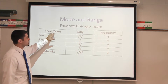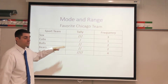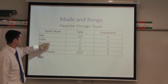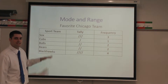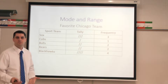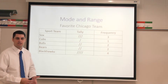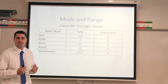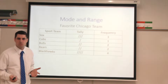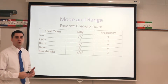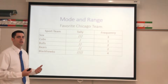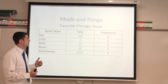I have our frequency table from 1.1 up here, which was our favorite Chicago teams, and we're going to take a look at this data and determine what is range, how do I find it, but then what does it mean. It's not just okay to say 'I know how to find the range.' What does the range actually tell me? And exactly the same thing for the mode — what is mode and what does it really tell me to help us understand this data set.